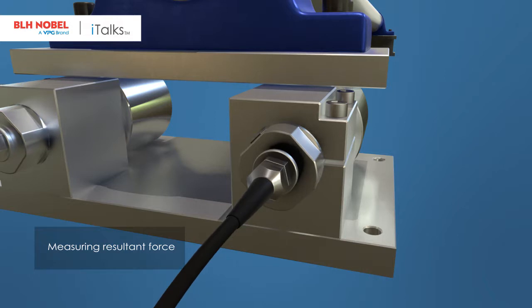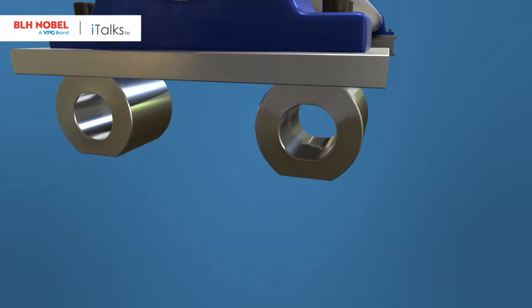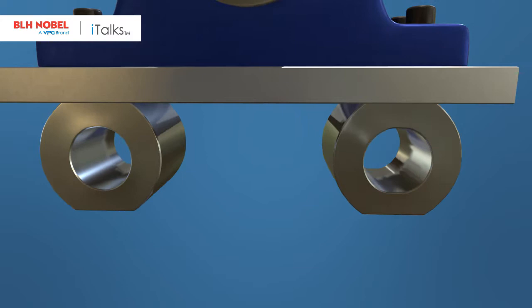The user simply rotates the load cell inside the unit without having to change the position of the mounting. Now the FMU is ready to make resultant force measurements.